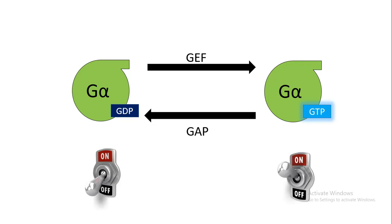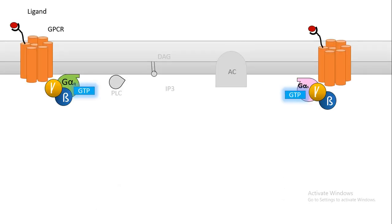GAPs switch off the G protein signaling and get them back, hydrolyze the GTP, and get them back to a GDP bound inactive state.